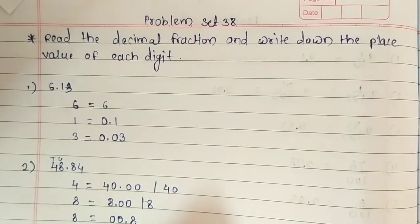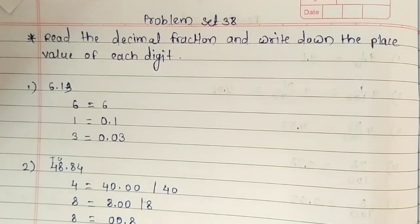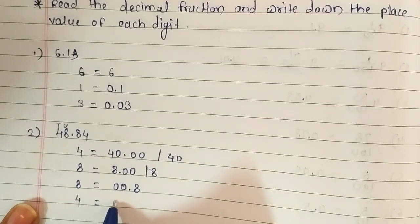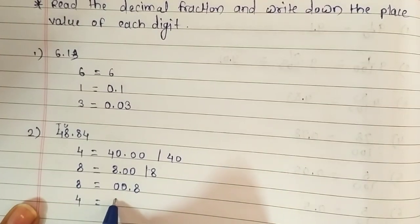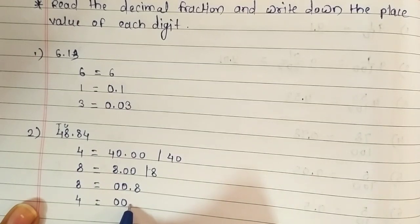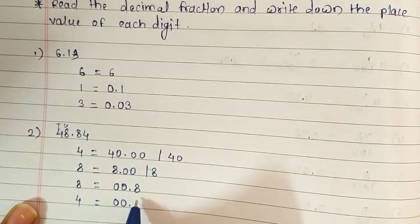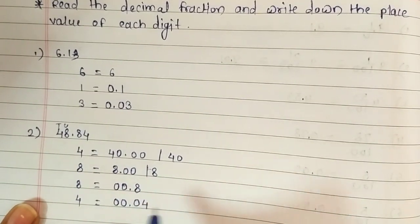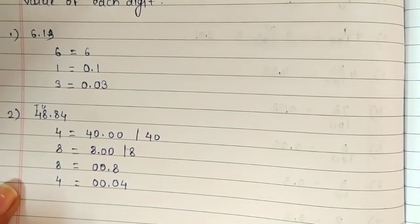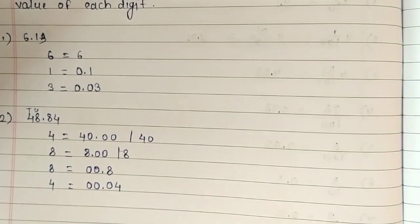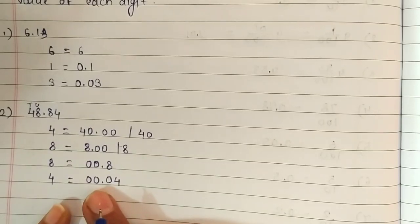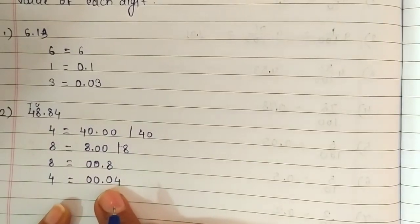Now the fourth place value. Write 0 for 4, 0 for 8, place a decimal point, 0 for 8, and then write 4. So the place value of the last 4 is 0.04.